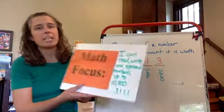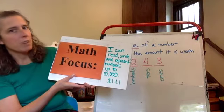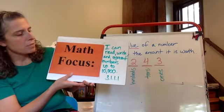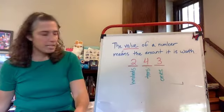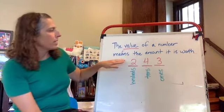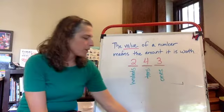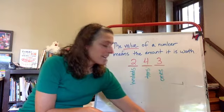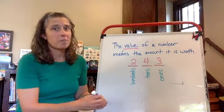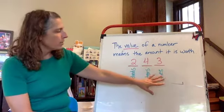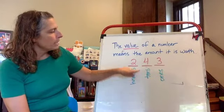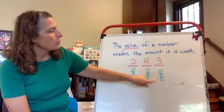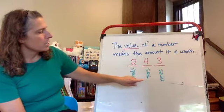Our math focus for today is I can read, write, and represent numbers up to 10,000. So for example, let's look at this number I wrote on here, 243. Notice how I was really careful not to read it with the and in there because that gets confusing when we start to talk about decimals this year. So I wrote it out and I labeled each of the place values underneath the digits.